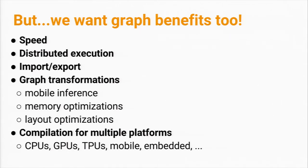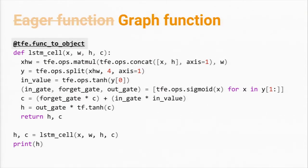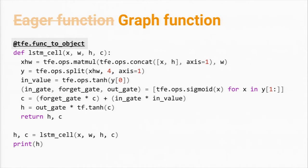To connect eager mode to the graph world, we have graph functions. If you define a function in eager mode, you can add a decorator at the top, and that decorator will turn it into a compiled function that can be processed with XLA, pushed down to a TPU, and intermixed with eager mode functions as you continue to prototype. There may be some performance cost, but this path to graphs for the majority of eager mode code is still going to give people a lot of the power and scalability they want.